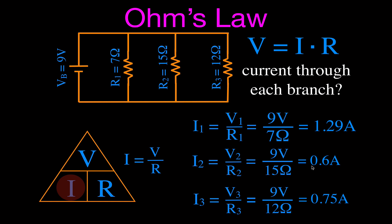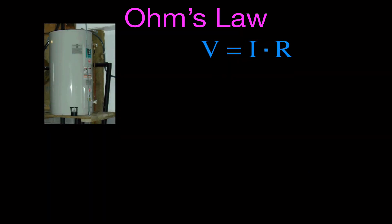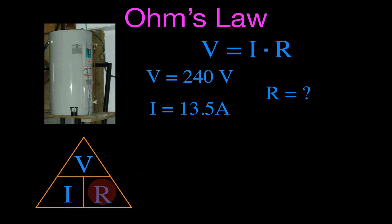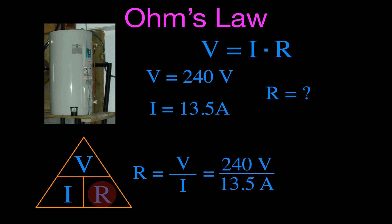Here's another example where we're going to solve for the resistance — this is a hot water heater. Using Ohm's Law, V equals I times R, the hot water heater is plugged into a 240-volt source and has a current of 13.5 amperes running through it. We want to know the resistance of the heating element inside. Using the Ohm's Law triangle, R equals V divided by I: 240 volts divided by 13.5 amperes gives us a resistance of 18 ohms.